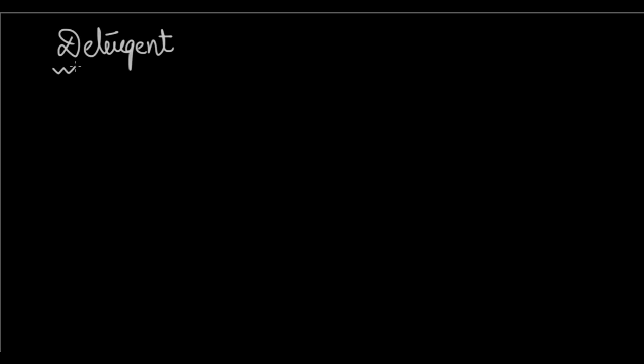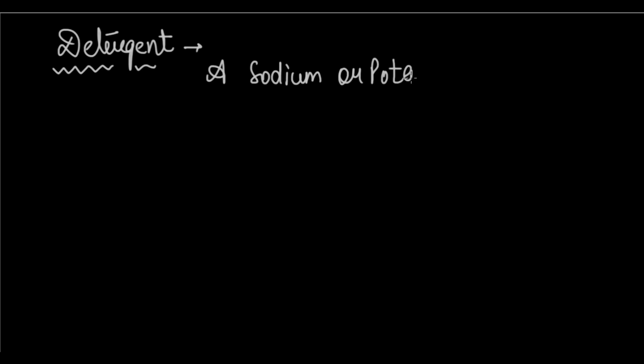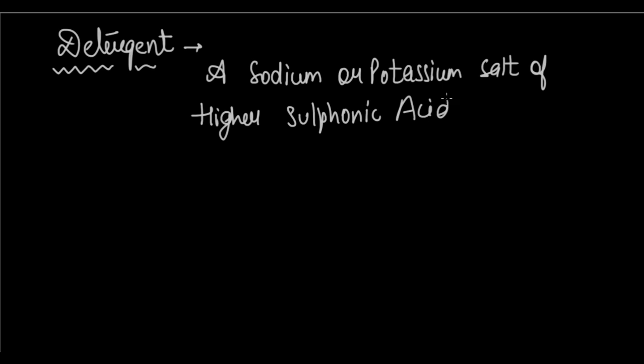Let us come to detergent. Detergent is basically slightly different from soap. It is a sodium or potassium salt of a higher sulfonic acid — where higher again means more than 11 carbon atoms. In your textbook it also mentions sulfonate or ammonium salts, which is pretty much the same thing. So this is what we call detergent: a sodium or potassium salt of higher sulfonic acid.